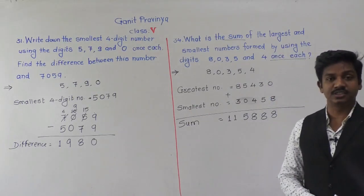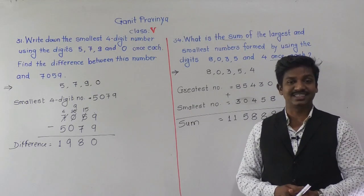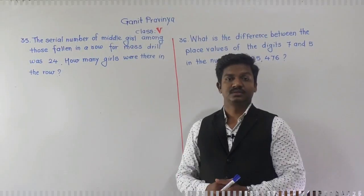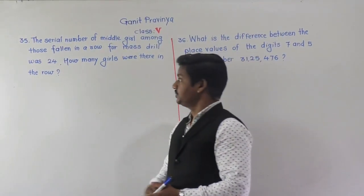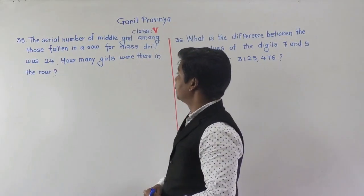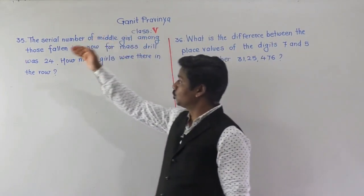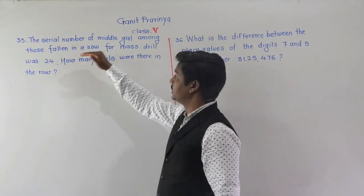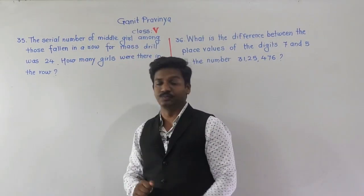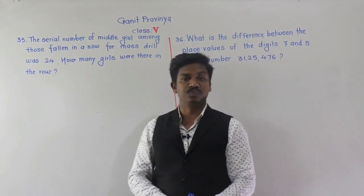Pause this video and write this down in your notebook. Let's move on to the next question. Question number 35: the serial number of the middle girl among those standing in a row for mass drill was 24. How many girls were there in the row?